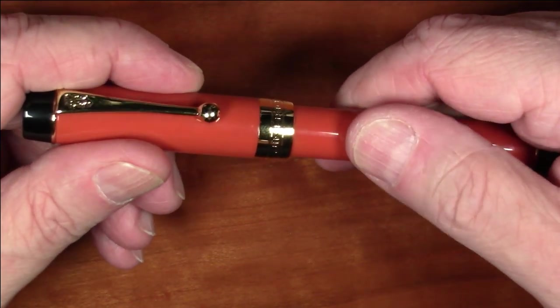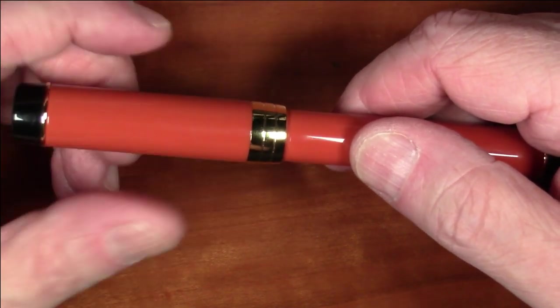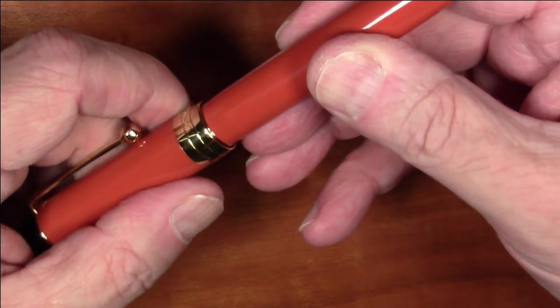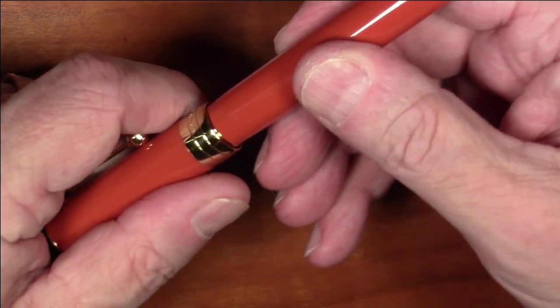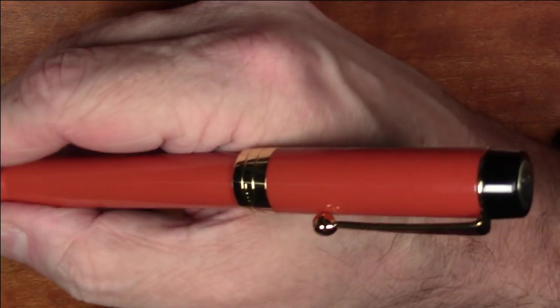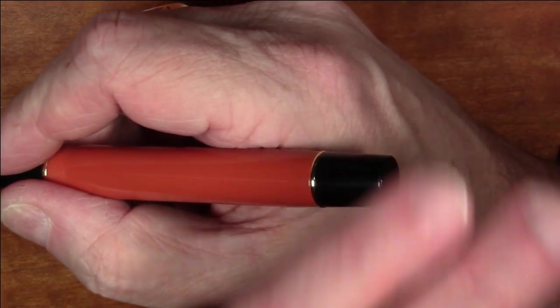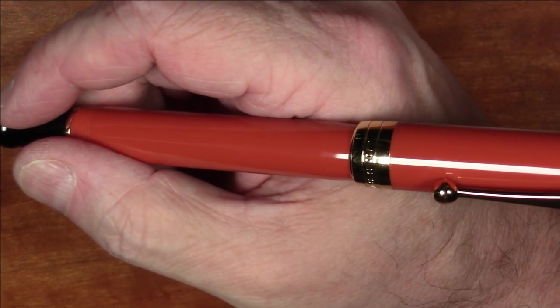It is a screw to uncap. It takes two and three-quarter turns to unscrew, and it does post, doesn't post really deep, but it posts quite solidly. You do end up with quite a long pen when you post it, so to me, it's just barely enough to use unposted, but I really prefer to post my pen, so I do post this.